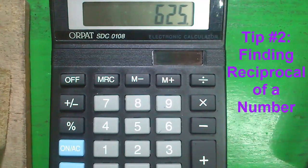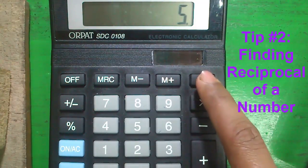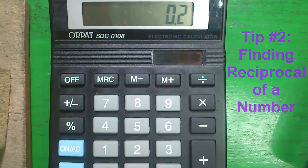Tip number 2, finding reciprocal of a number. To find out reciprocal of a number, enter the number and press divide and equals. Reciprocal is 1 divided by that number.